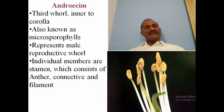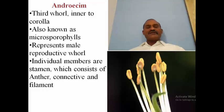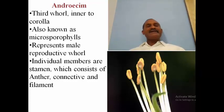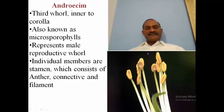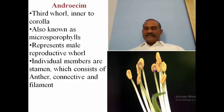The third whorl — the first essential whorl — is the androecium, the male whorl, made up of modified reproductive leaves called microsporophylls, also referred to as stamens or anthers. A single stamen consists of three components: the anther lobes at the top, the connective tissue in the middle, and an elongated structure called the filament, which orients the anther to a particular height in the flower.